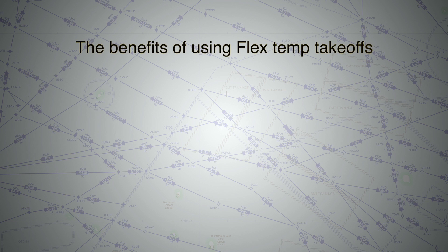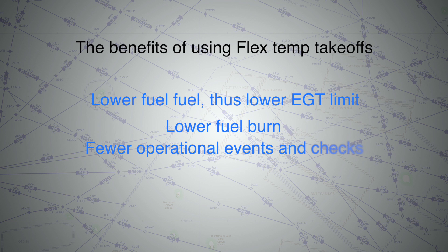The benefits of taking off with less than maximum thrust are as follows: lower fuel flow and hence lower AGT for takeoff, lower fuel burn, fewer operational events and engine checks.